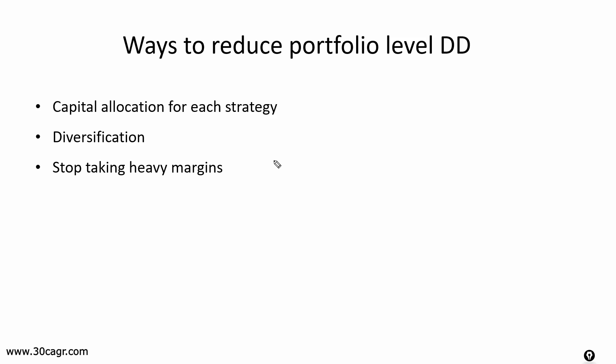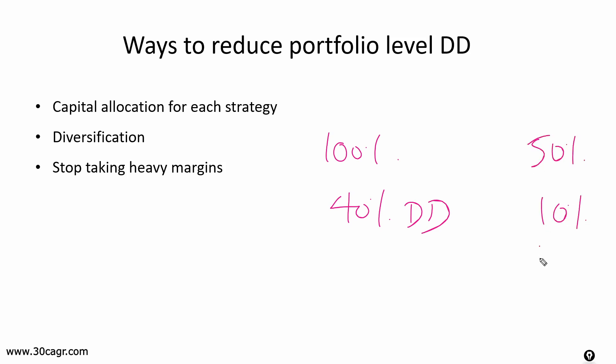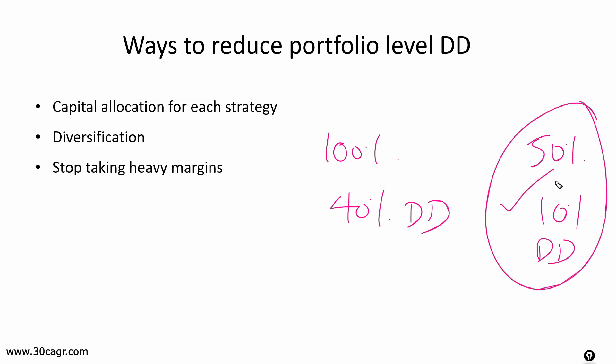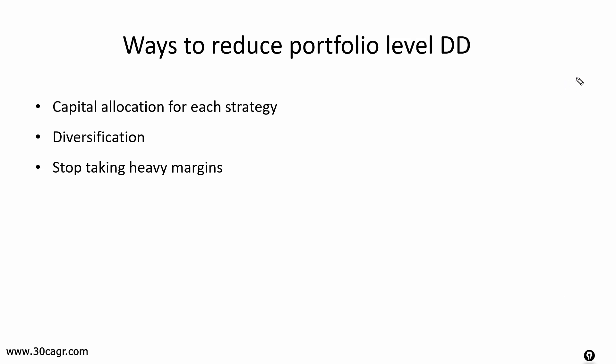Drawdowns can really hurt your portfolio if not taken care of properly. Ensure you pay utmost attention to your drawdowns. It is okay to have lesser profits, but make sure drawdowns are absolutely minimum. Given a choice between a strategy with 100% profits and 40% drawdown versus 50% return with just 10% drawdown, I always choose the second one — I only lose 10% of my capital at any given point. There will be absolutely no stress with that strategy.